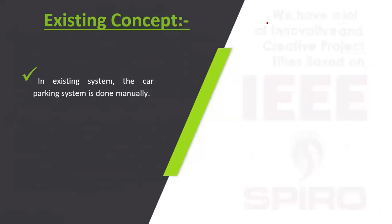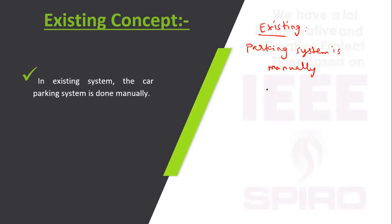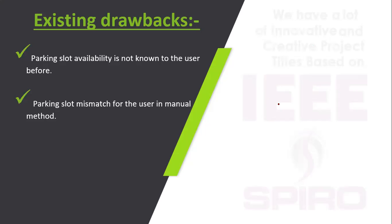In the existing system, the parking system is manual. If a person is going to a theatre, he has to park his vehicle. If there is no parking available, he will go outside for private parking and will get paid for that. To avoid this method, we are going to propose a new method. The existing parking system is done manually — this is the existing concept.